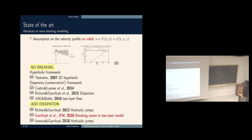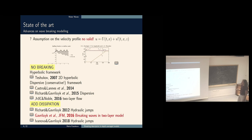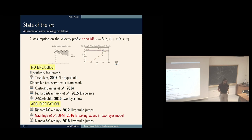For breaking wave description, Gavrilyuk considered two layers of water: a bottom layer with a hyperbolic system where shocks and vorticity creation can occur, and a top layer where the dispersive model is solved. This is how breaking waves are described — vorticity is created at the shock via Rankine-Hugoniot relations. In the dispersive context there are no shocks visible in numerical simulation, so there is no production of vorticity, meaning we need to do something else. This is the topic of this presentation.